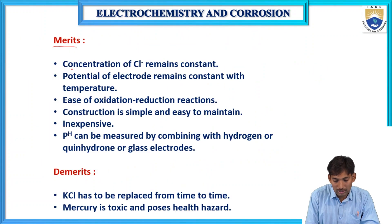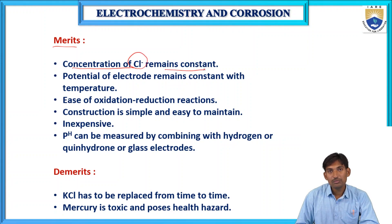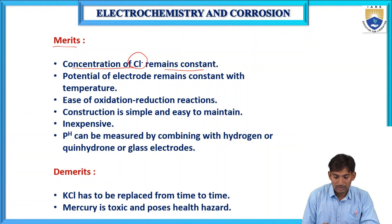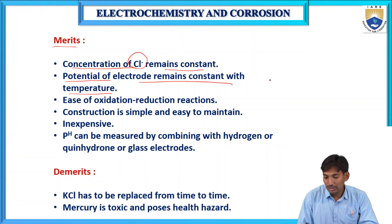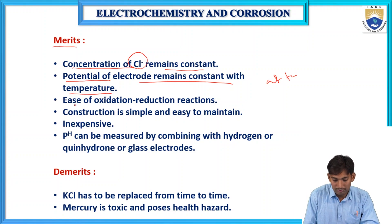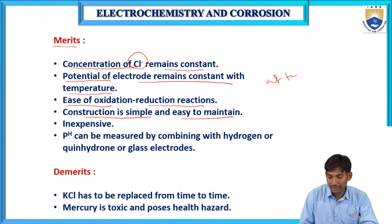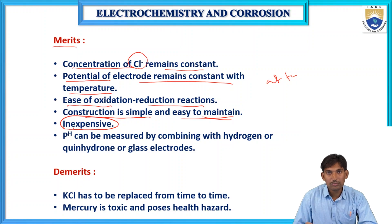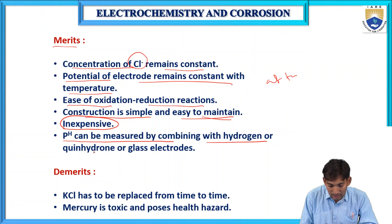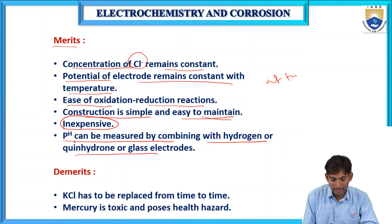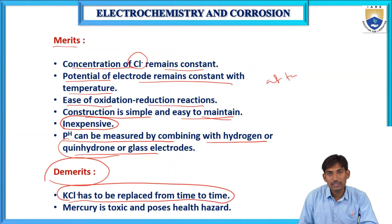Merits of calomel electrode: the concentration of Cl⁻ remains constant; the potential remains constant with temperature; oxidation and reduction reactions occur easily; construction is simple and easy to maintain; it is inexpensive; and pH can be measured by combining it with hydrogen and quinhydrone glass electrodes. Demerits: KCl has to be replaced from time to time, and mercury is toxic, posing health hazards.